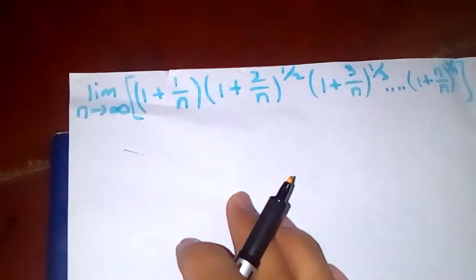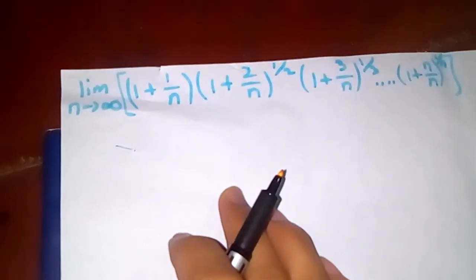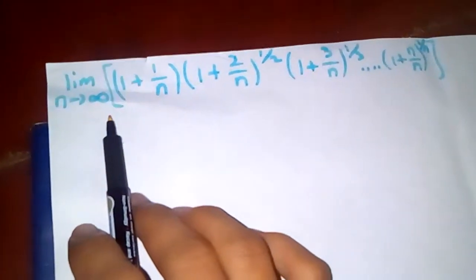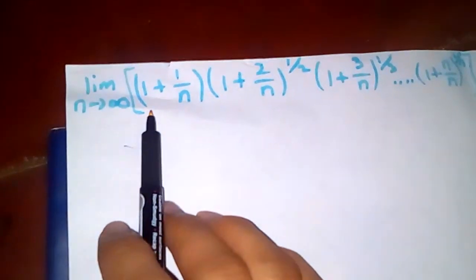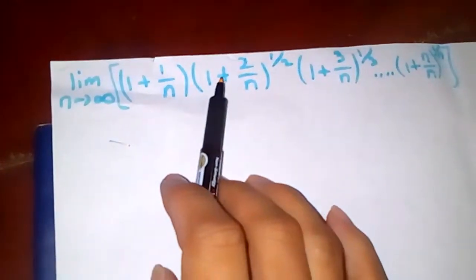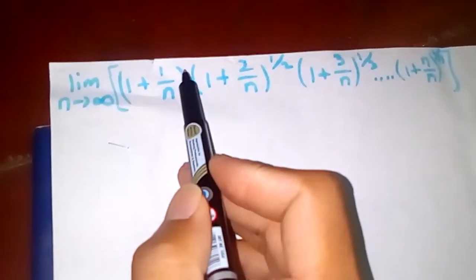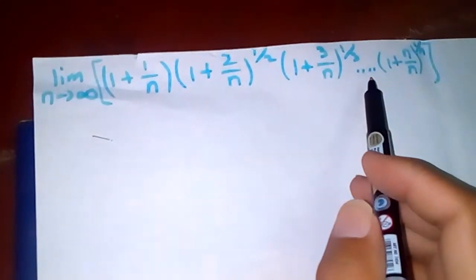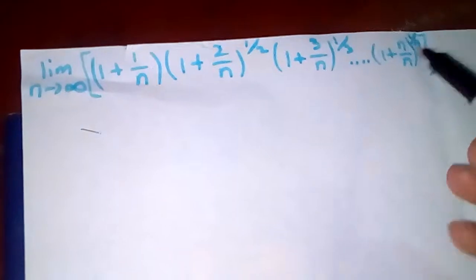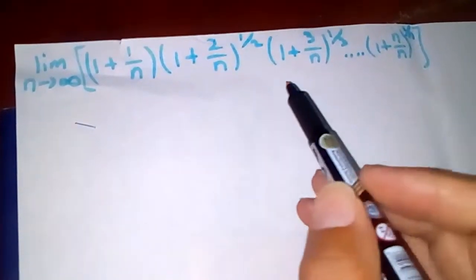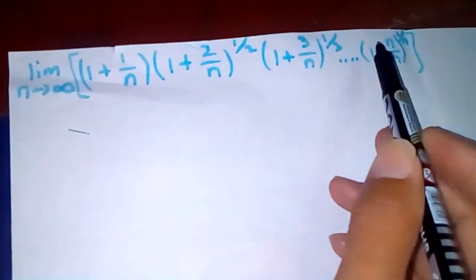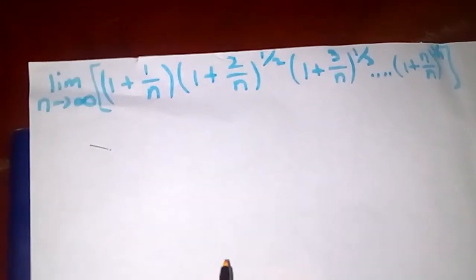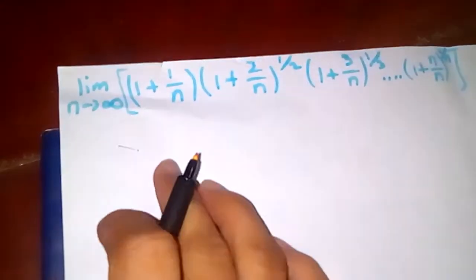Thanks for watching my video today. Let's evaluate this limit: limit as n tends to infinity of (1 plus 1/n) times (1 plus 2/n) to the power 1/2, times (1 plus 3/n) to the power 1/3, and so on up to (1 plus n/n) to the power 1/n. These terms are changing up to n times.